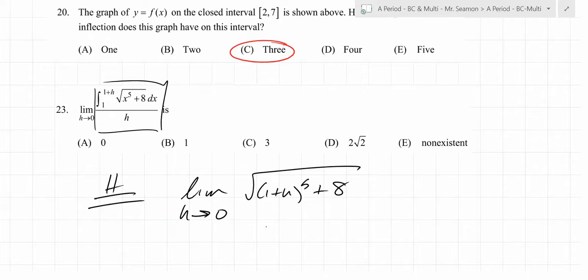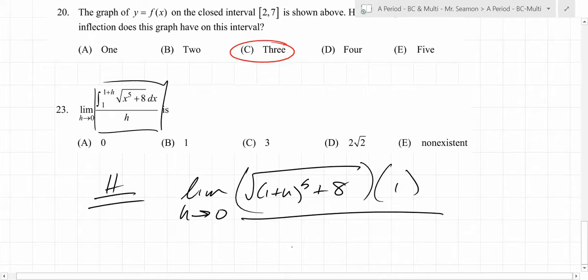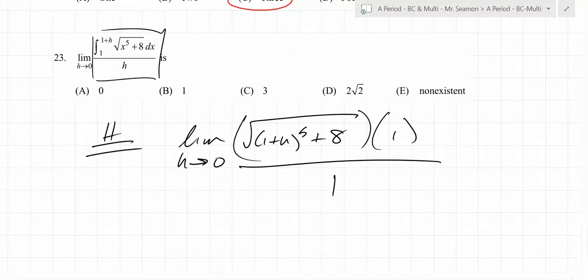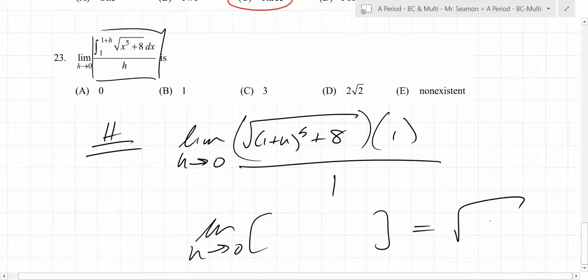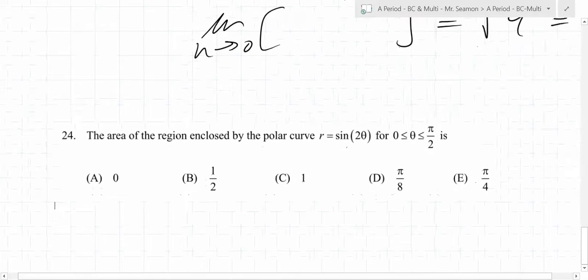When you differentiate an integral, they obliterate each other. The key thing is, it doesn't matter what the bottom limit of integration is - it has to be a constant. But whatever it is up top, that replaces the value inside the function. So instead of x to the 5th, we have (1 plus h) to the 5th. We're using the chain rule - it's being multiplied by 1, because you're differentiating 1 plus h. What goes on the bottom? 1. Now can you just plug in 0? Yes, you get the square root of 9, which is 3. I think the answer is C.